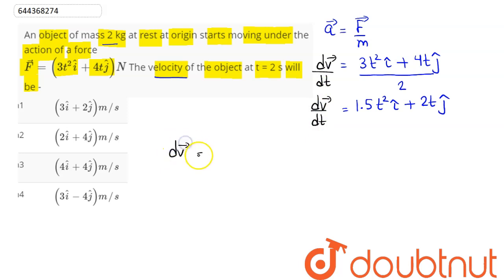So, we can say dv can be written as 1.5 t² dt i cap plus 2t dt j cap.